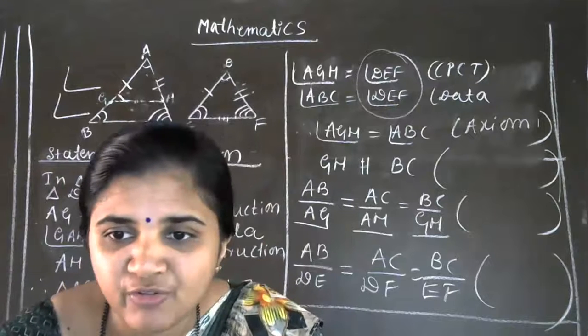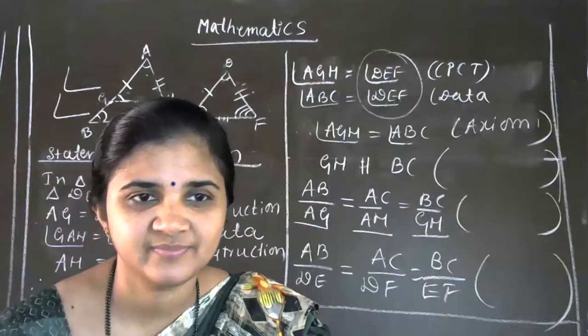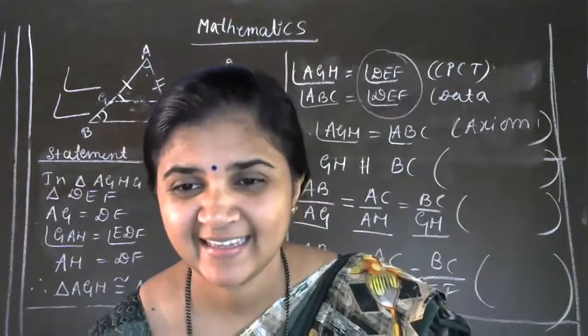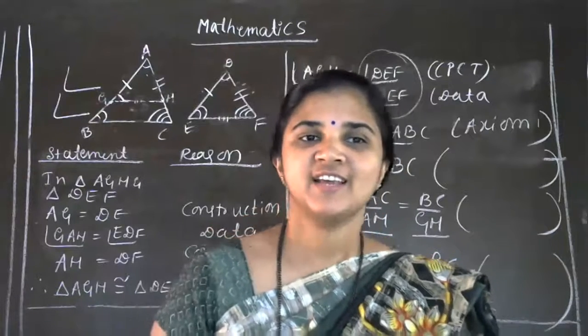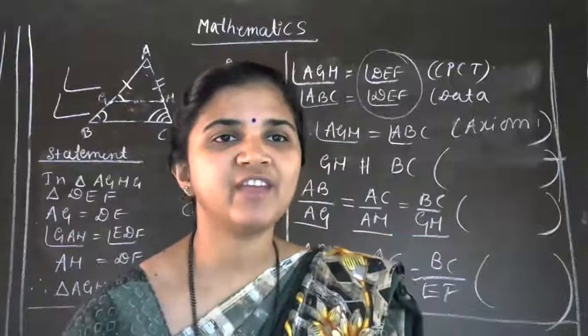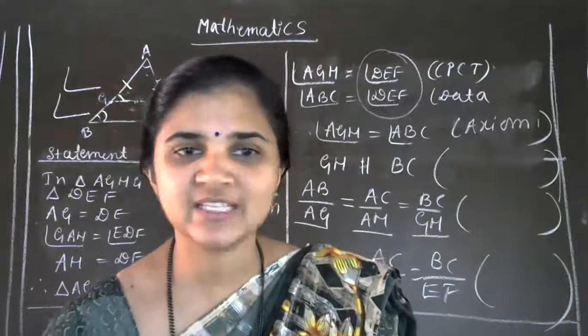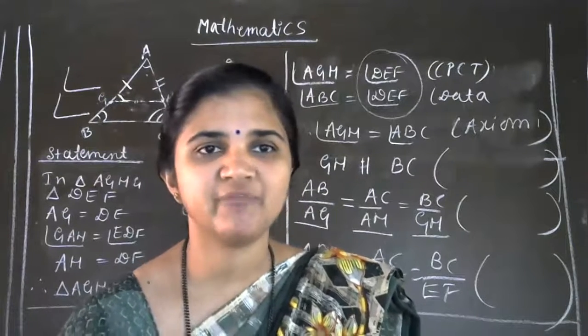Is that clear students? I will give five minutes. If you have any doubts, you can see. This is the explanation of AA similarity criteria. If you are having any confusion, you can ask — last two minutes for discussion. Send me the messages. I am waiting.